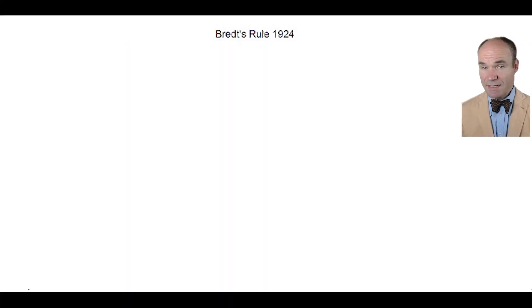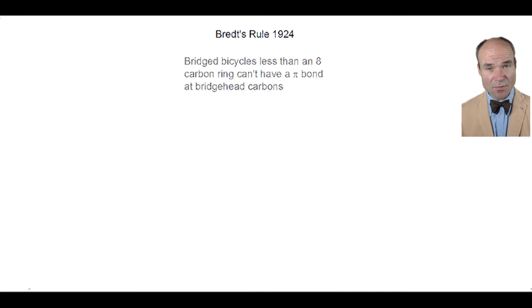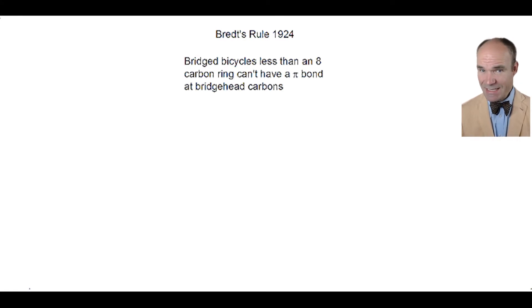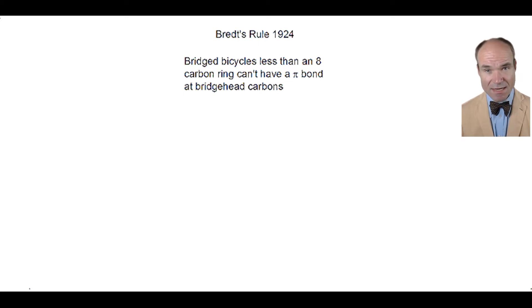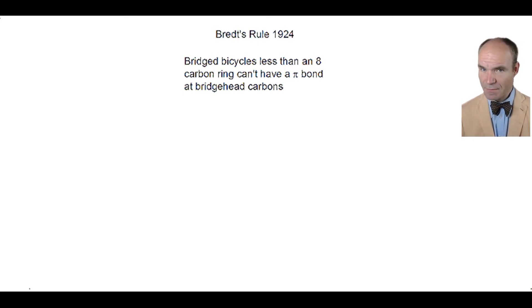Julius Bredt, in 1924, observed that bridged bicycles where the rings are less than eight carbons in size do not have bridgehead carbons that are part of a pi bond.